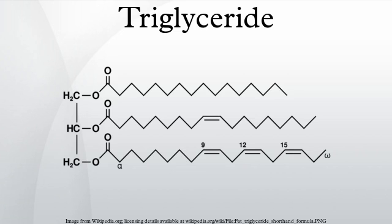Saturated compounds are saturated with hydrogen — all available places where hydrogen atoms could be bonded to carbon atoms are occupied. Unsaturated compounds have double bonds between carbon atoms, reducing the number of places where hydrogen atoms can bond to carbon atoms. Saturated compounds have single bonds between the carbon atoms, and the other bond is bound to hydrogen atoms. Unsaturated fats have a lower melting point and are more likely to be liquid at room temperature. Saturated fats have a higher melting point and are more likely to be solid at room temperature.